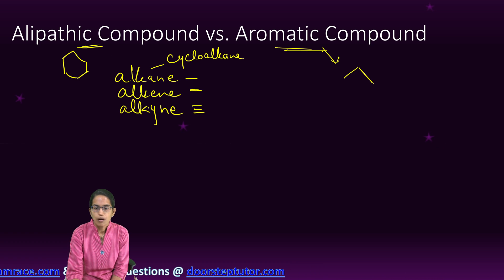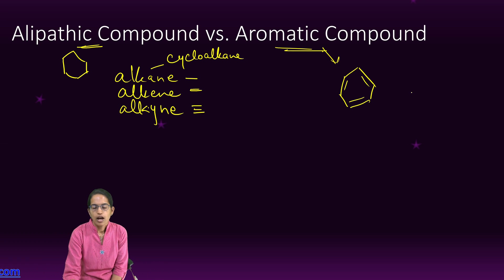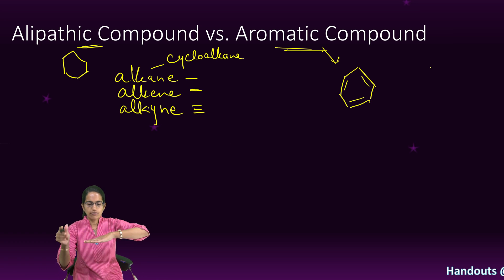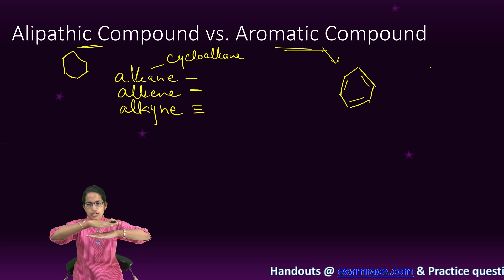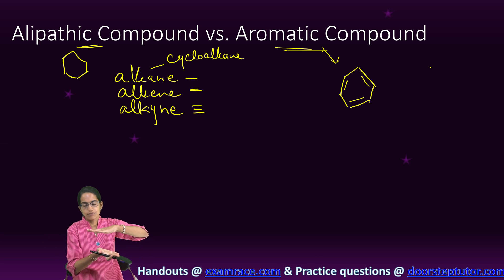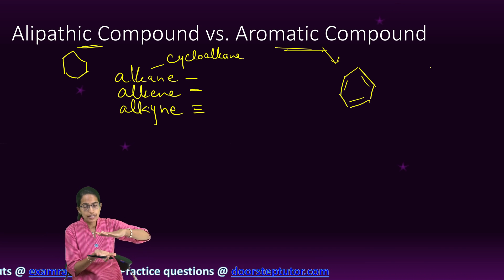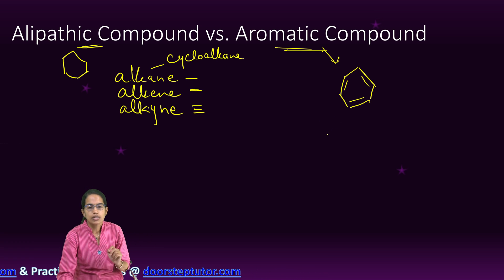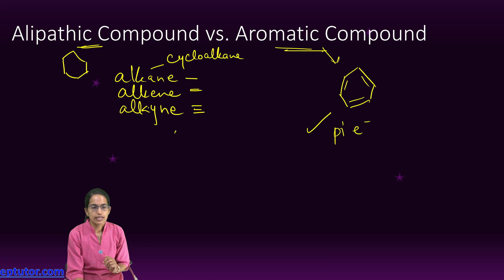In an aromatic compound, you would have delocalized pi electrons. This is the benzene structure — a benzene hexagon with a resonating structure over and below it. That is where we say the delocalized pi electrons are present. So delocalized pi electrons are present in aromatic compounds and absent in aliphatic compounds.